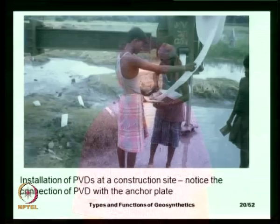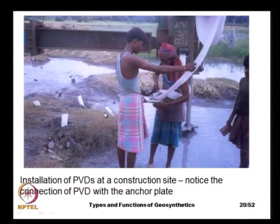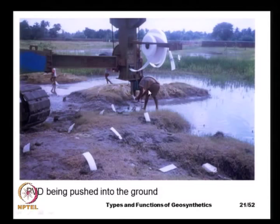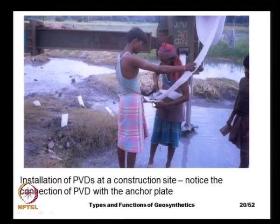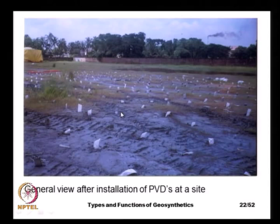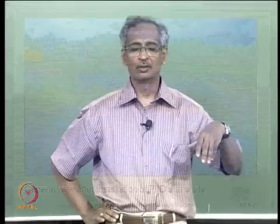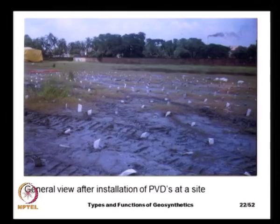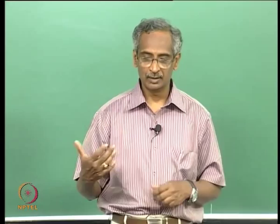Here we see the application of prefabricated vertical drains at a construction site with a very soft clay subgrade. We see installed PVDs and workers attaching the PVD to an anchor plate. Once the entire ground is treated with PVDs, we apply a surcharge corresponding to the expected foundation pressures after full construction.